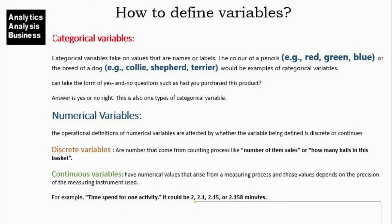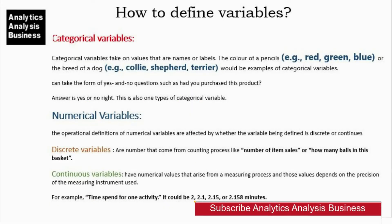Categorical variables take on values that are names or labels. For example, the color of a pencil — red, green, blue — or the breed of a dog — collie, shepherd, terrier. These are examples of categorical variables. They can also take the form of yes/no questions, such as 'Have you purchased this product?' where the answer is yes or no. This is also one type of categorical variable.